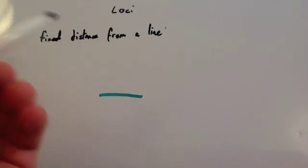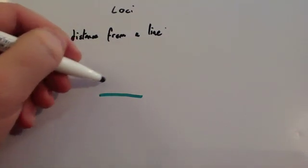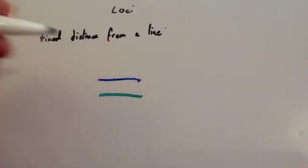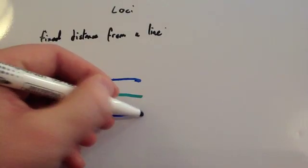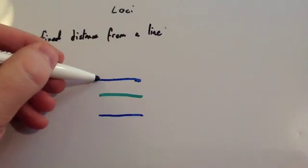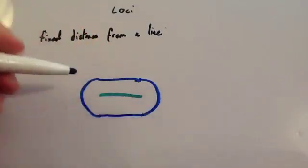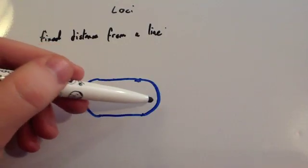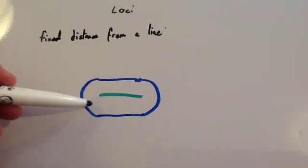Now let's consider a fixed distance from a line. If I said find the possible position of points which are two centimetres from this line, you could have two centimetres above — making a straight line exactly two centimetres above the line, which would be parallel to it — and two centimetres below the line as well. At the ends, it's now from a fixed point, so you would have a semicircle of radius two centimetres on either end, a bit like a running track.